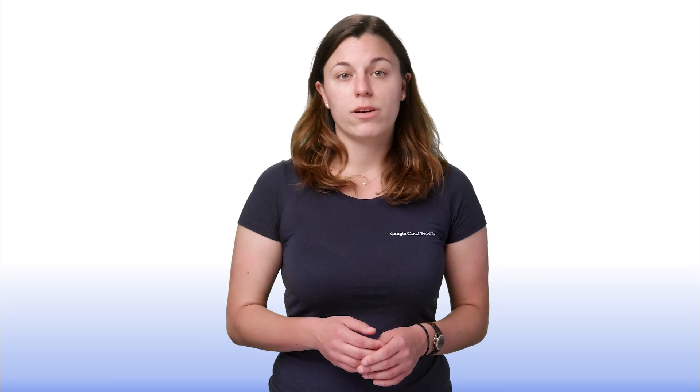So to sum up our story, Google uses multiple layers of security to protect your data in transit, including authentication, integrity, and encryption. We encrypt and authenticate data in transit at one or more network layers when that data moves outside physical boundaries not controlled by Google.